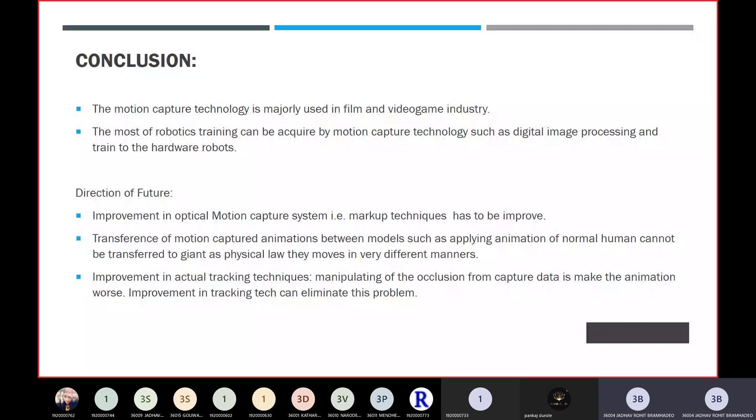Another area is transference of motion capture animation between models, such as applying animation of a normal human cannot be transferred to a giant as they move in very different manners. For example, if someone is making a movie with motion capture technology and they want to capture dragon animation, and they use a human for the dragon's expression, it is not possible with current motion capture technology. They need something which can be used for animal animations.